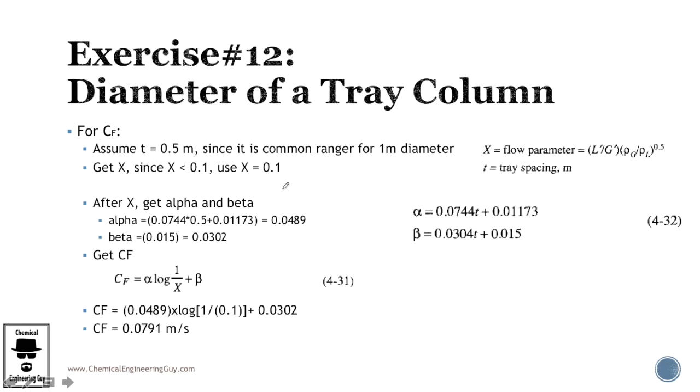Now, let's see what do we need here. In order to calculate CF, I need to have alpha and beta values. In order to have alpha and beta values, I gotta have the tray spacing. And in order to get the tray spacing, guys, remember that I gotta know the diameter of my tower, because the larger the diameter, the more spacing I require. So, there are two ways we can do this.